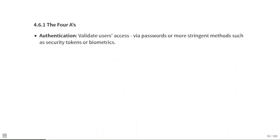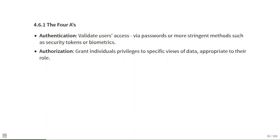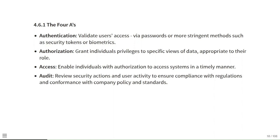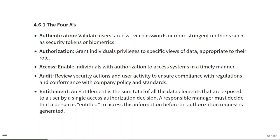The four A's: Authentication — validate users' access via passwords or more stringent methods such as security tokens or biometrics. Authorization — grant individuals privileges to specific views of data appropriate to their role. Access — enable individuals with authorization to access systems in a timely manner. Audit — review security actions and user activity to ensure compliance with regulations and conformance with company policy. Entitlement — the sum total of all data elements exposed to a user by a single access authorization decision; a responsible manager must decide that the person is entitled to access this information before an authorization request is generated.